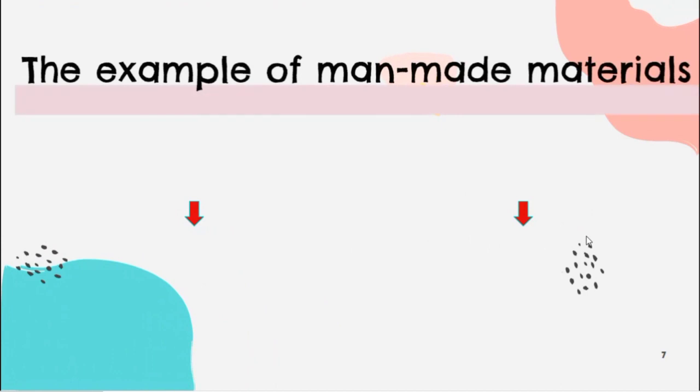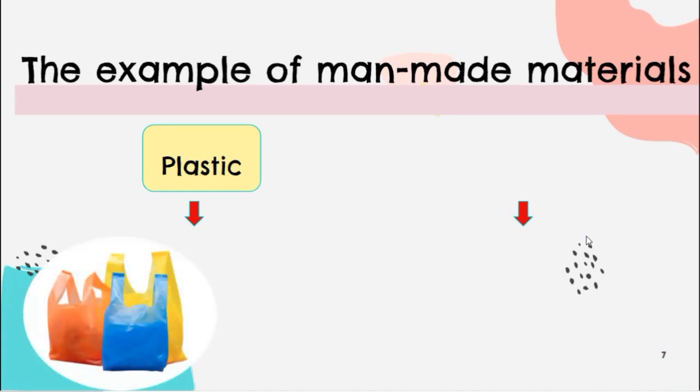Okay, now the example of man-made materials. First, plastic, such as this bag, plastic bag, and this cup and straw.